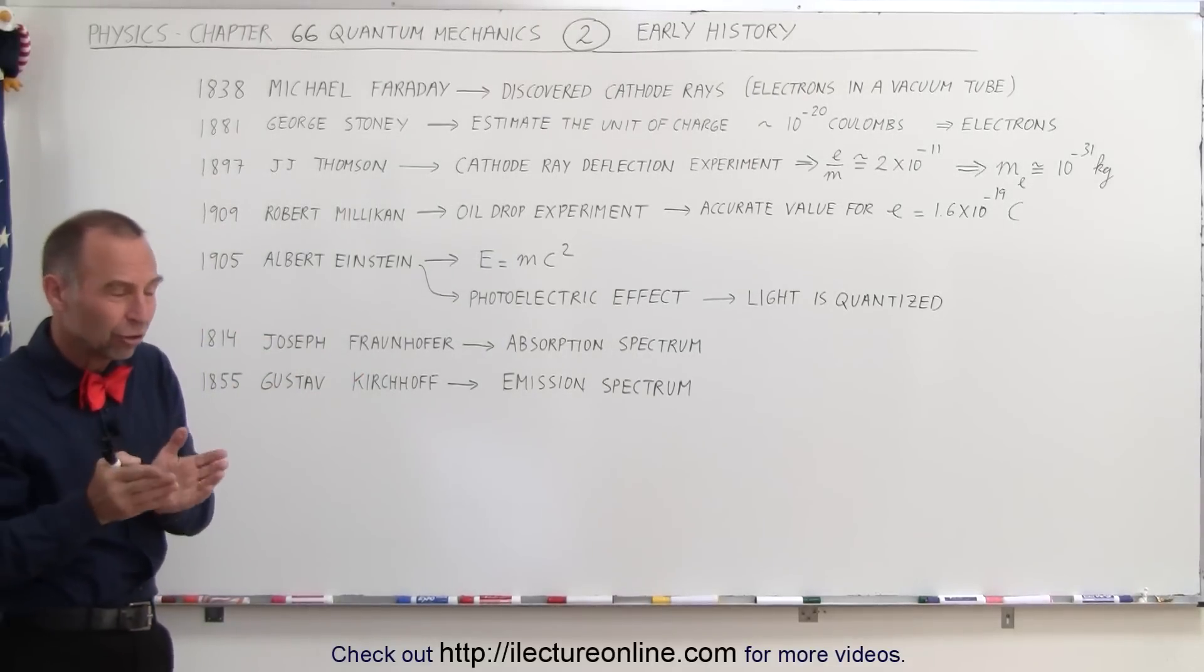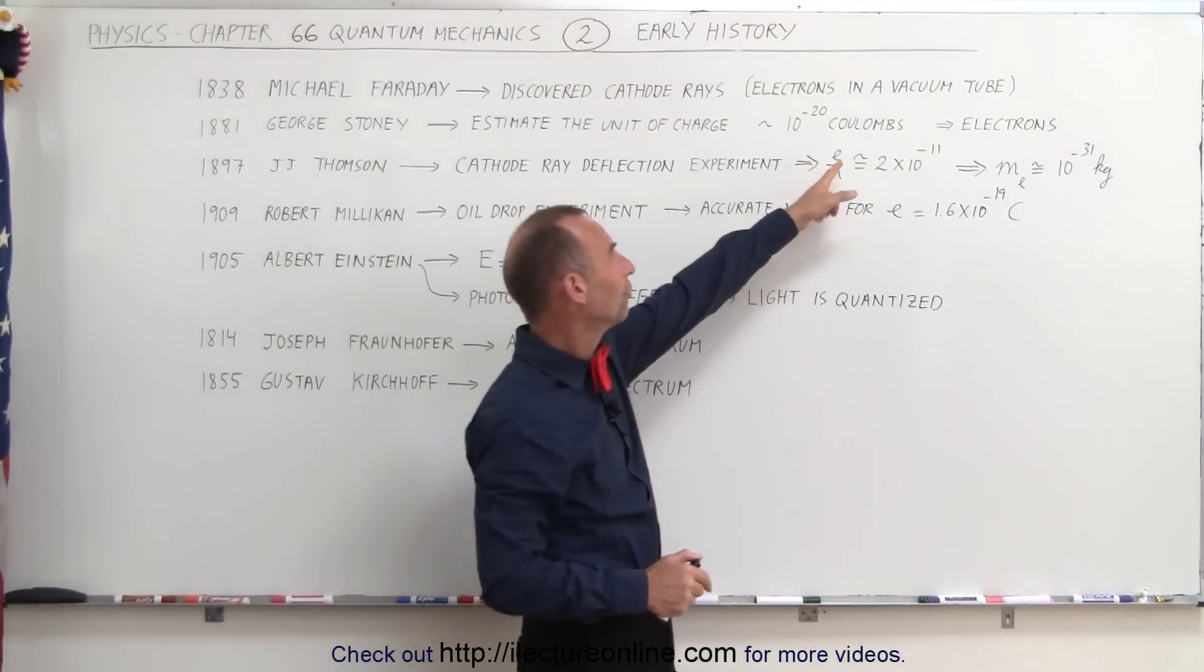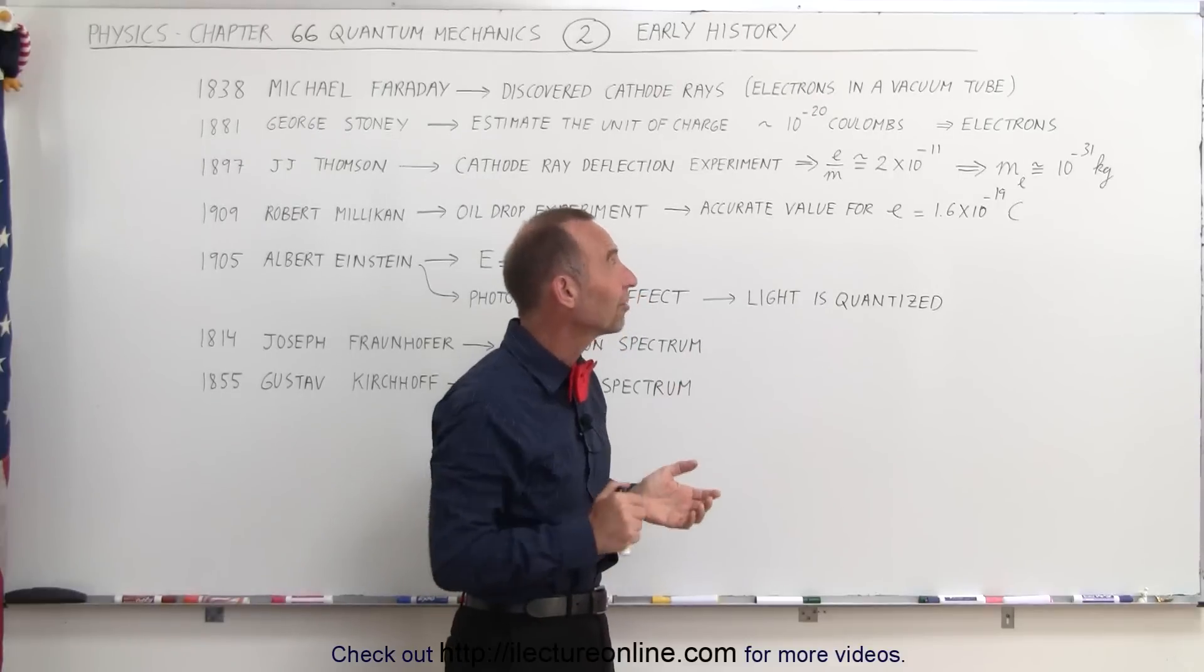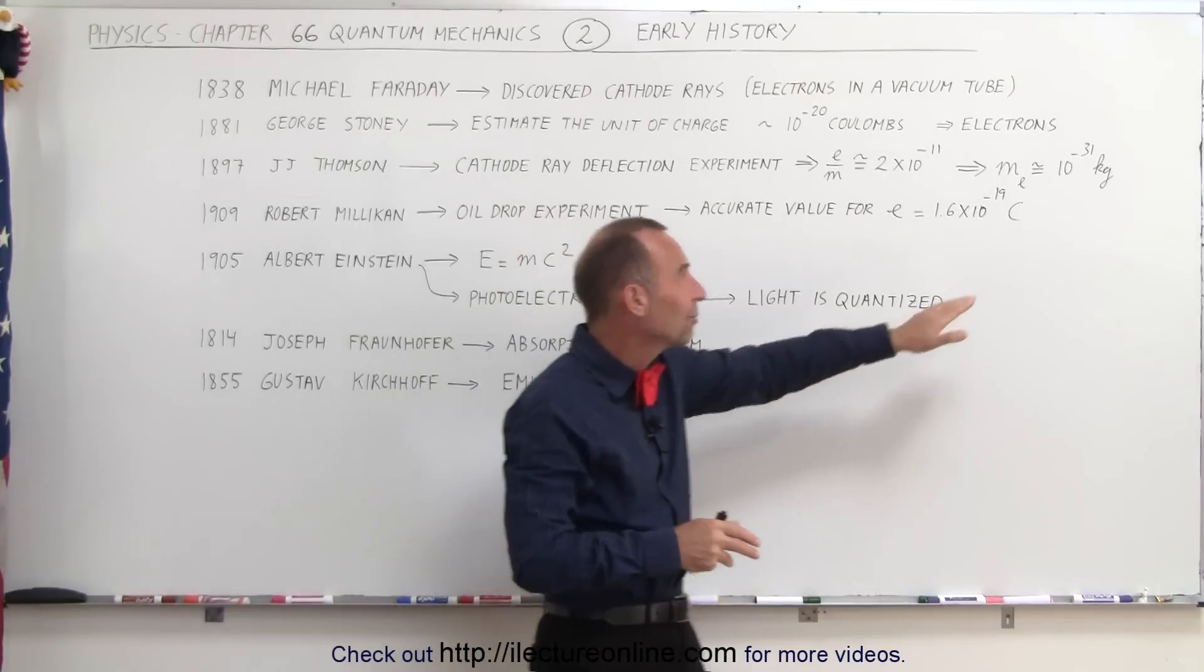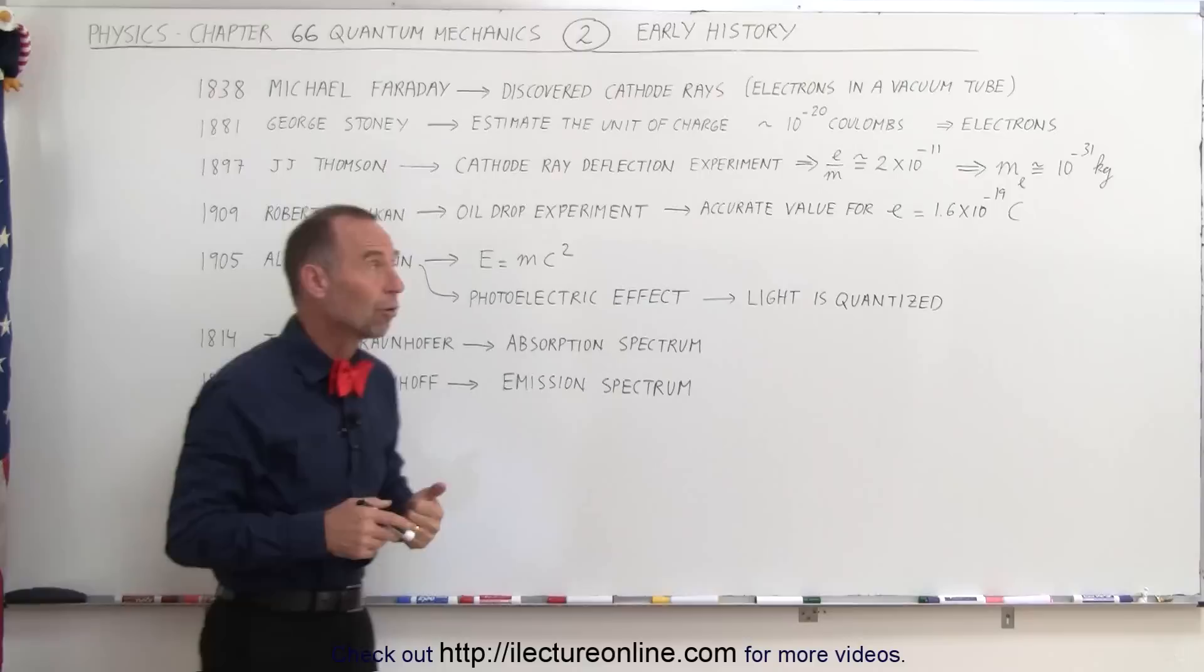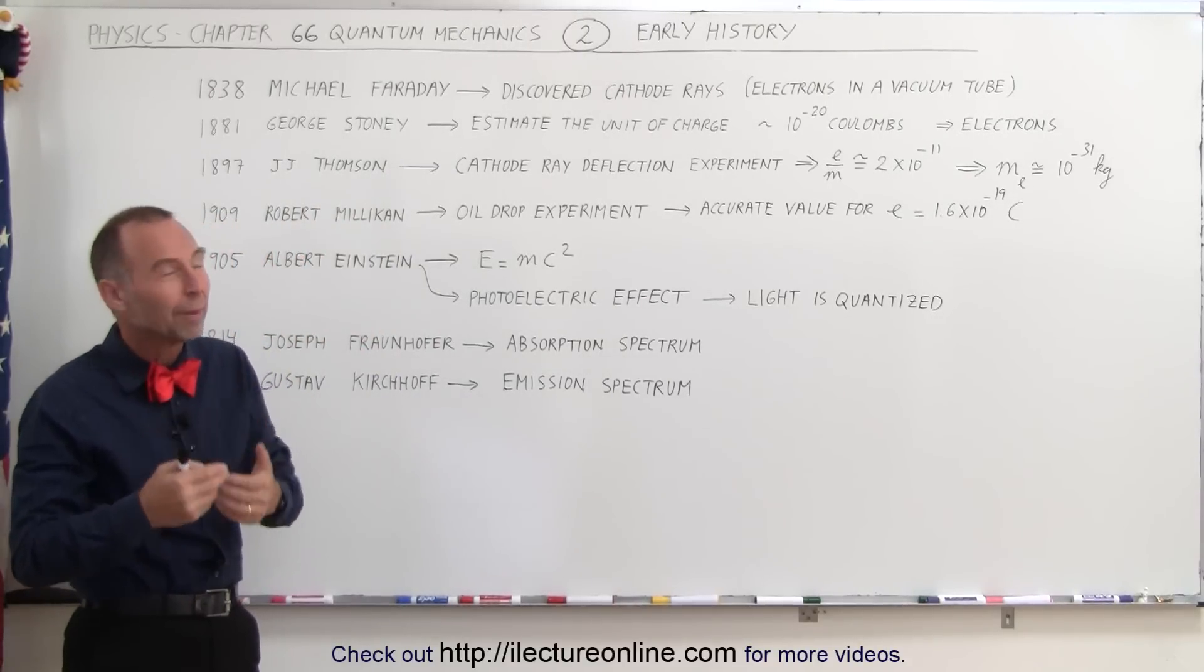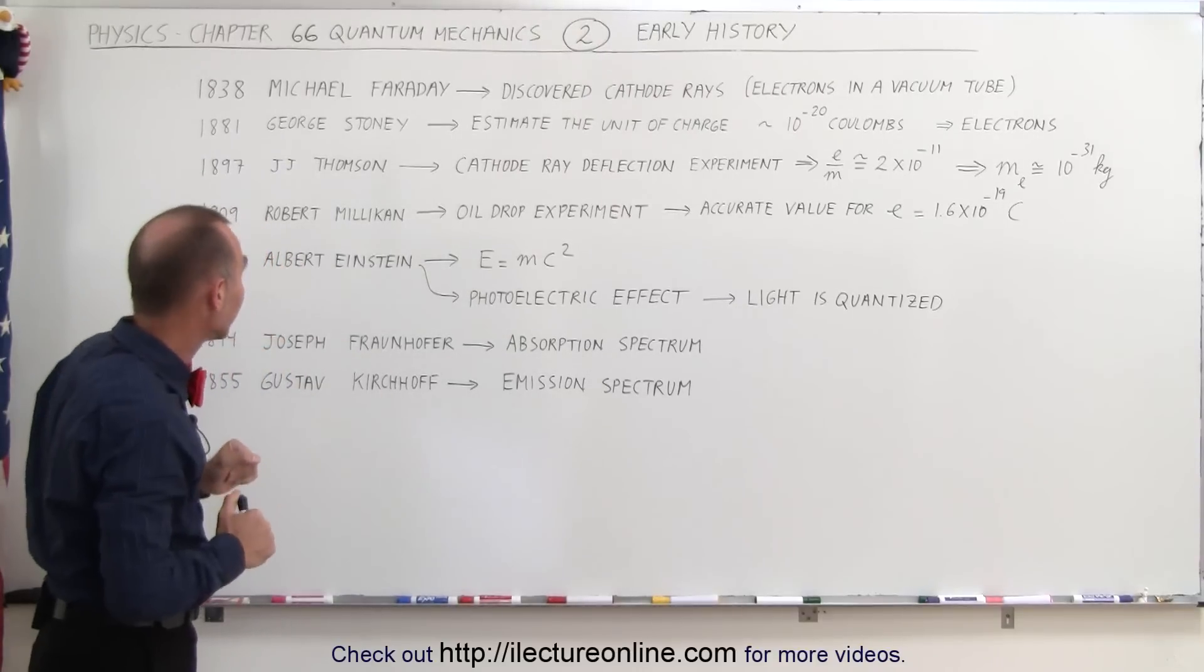From that deflection, studying that deflection, they were able to come up with a ratio of the charge per mass, and they knew that ratio was around 2 times 10 to the minus 11, which then resulted in them estimating the mass to be about 10 to the minus 31 kilogram per electron. Again, not quite accurate, because later on we found out it was closer to 10 to the minus 30, but at least they were right on the right track here.